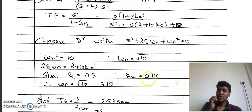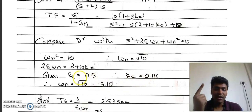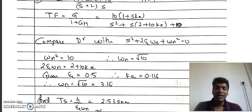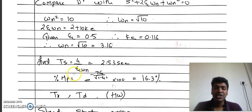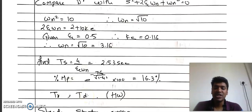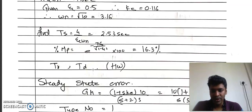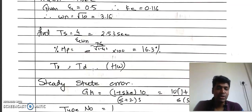Once we have ζ and ωn, we can calculate all the time domain specifications: rise time Tr, peak overshoot %Mp, peak time Tp, delay time Td, and settling time Ts. Calculating all these time domain specifications is your homework.